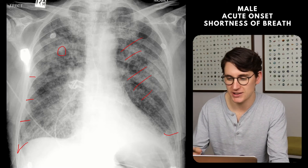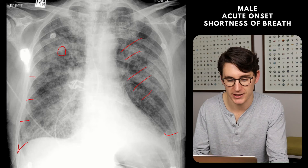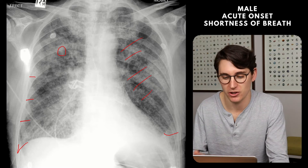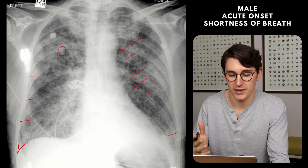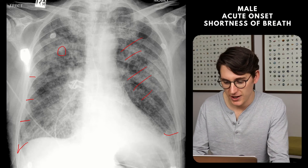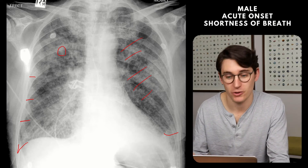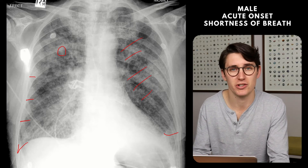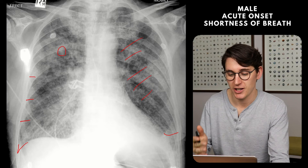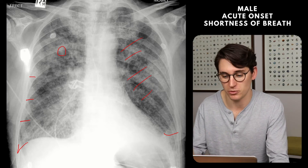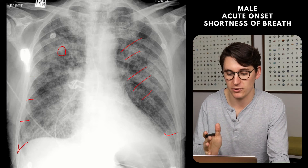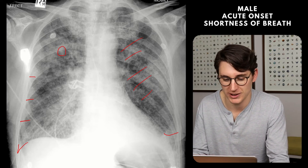These findings, given the presentation, are most likely in keeping with acute pulmonary edema, which is most commonly secondary to a cardiogenic cause — whether that be congestive cardiac failure or fluid overload. If I were to discuss this with the requesting clinician to get more clinical history, other differentials to consider include infection or pneumonia, as well as acute respiratory distress syndrome or other non-cardiogenic causes of acute pulmonary edema.